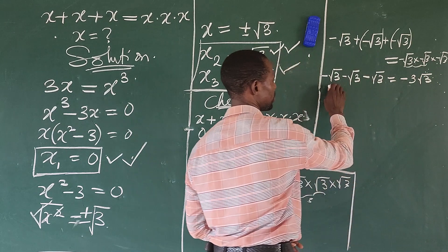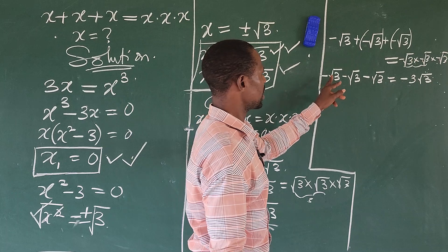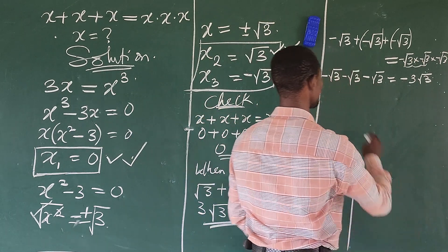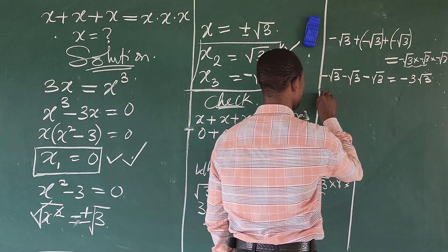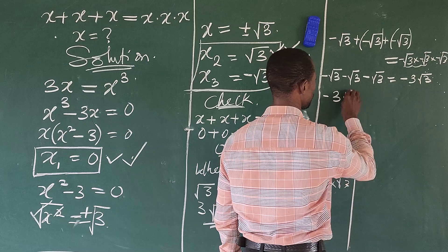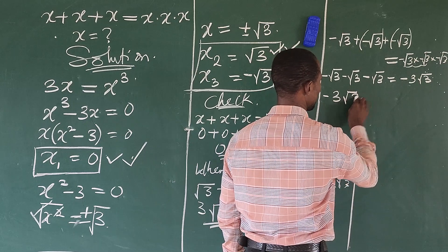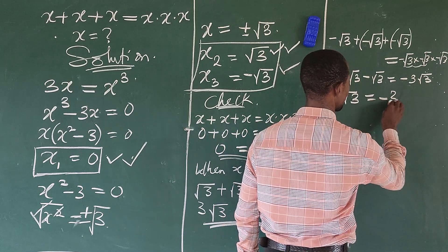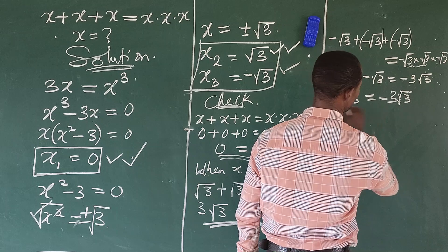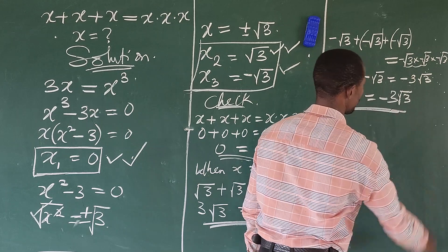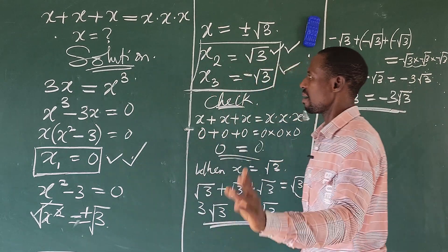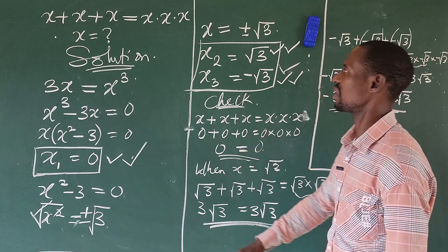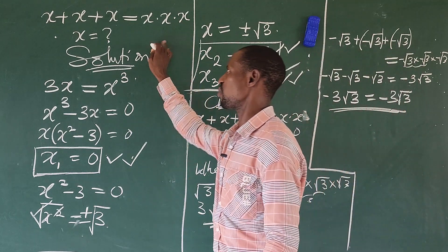Now let's come to this side. So minus root 3, minus root 3, minus root 3 — this will give us minus 3 times root 3, which equals minus 3 times root 3 on the right. So this shows that the third answer also satisfies the original equation.